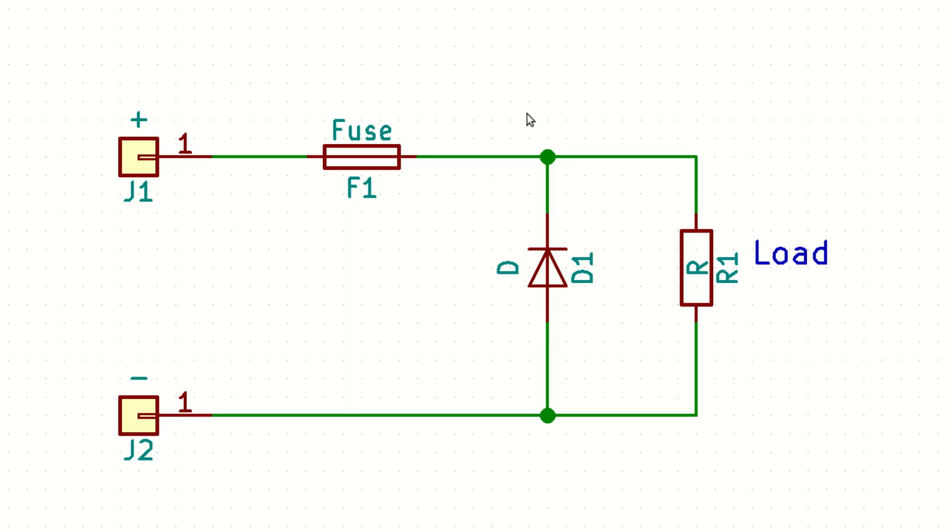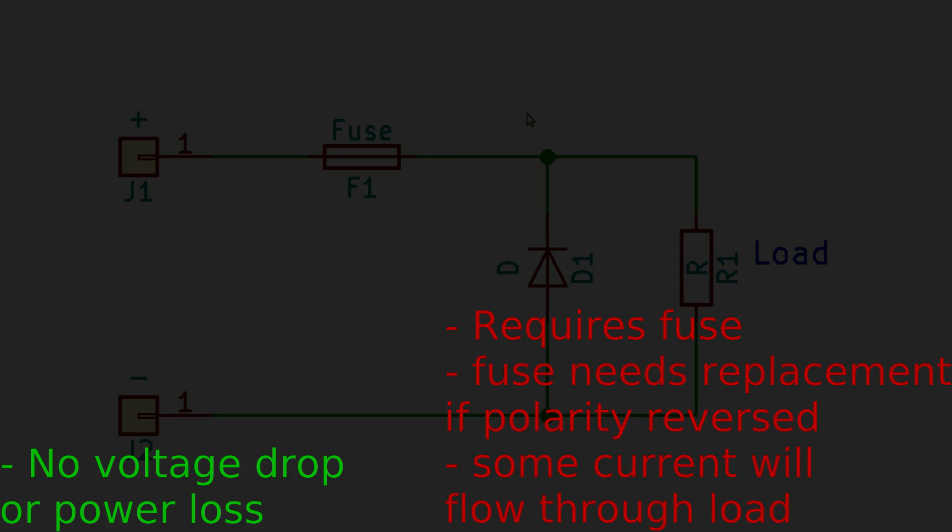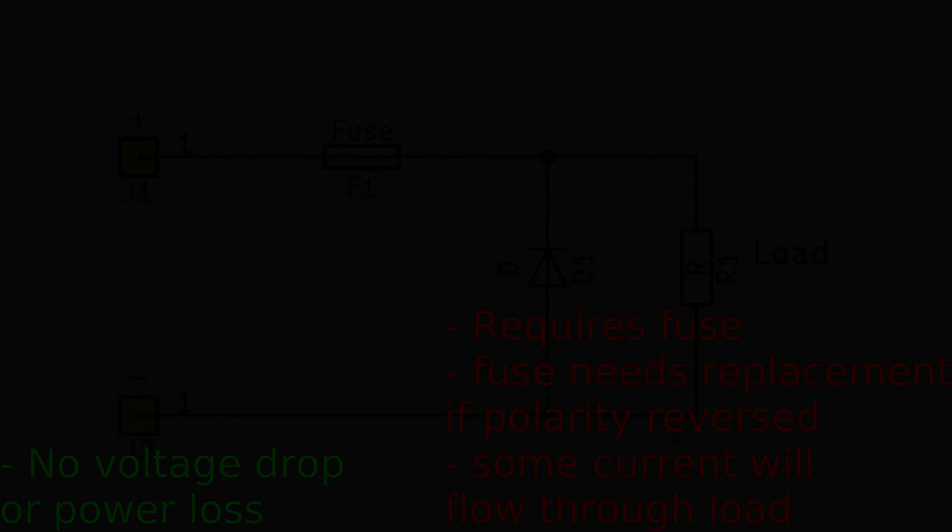Another bad point is the fuse basically blows when it's put in reverse so every time it happens you need to replace the fuse. And also bad point about this it's not 100% bulletproof cause when you reverse the polarity the diode actually with a load creates a voltage divider so there is still some current going through the load. That's something you have to have in mind when you're gonna utilize this circuit.